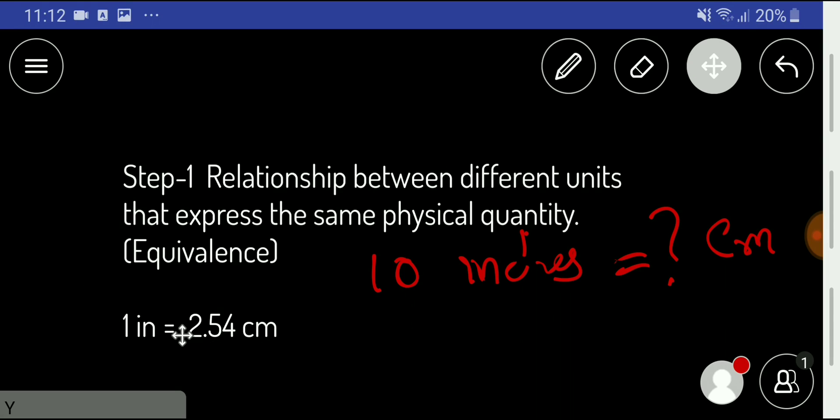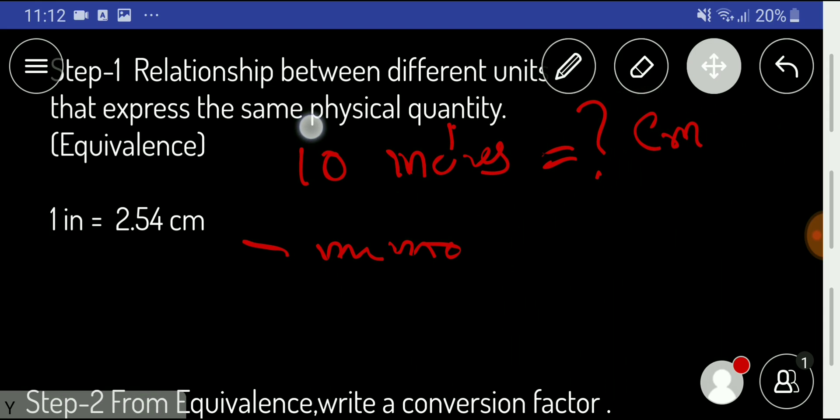And we have one relationship: 1 inch equals 2.54 centimeters. We need to memorize this thing. 1 inch equals 2.54 centimeters. Okay, in the second step.